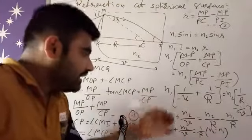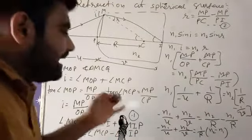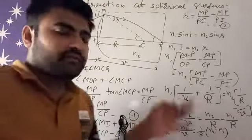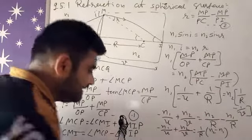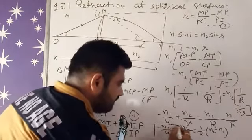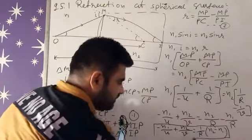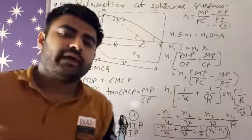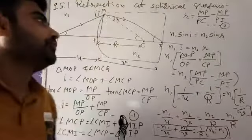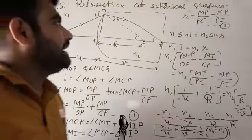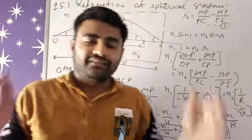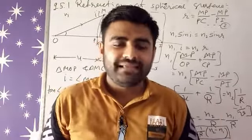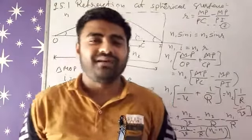So our general equation for refraction at a spherical surface is: minus n1 over u plus n2 over v equals (n2 minus n1) over R. This formula applies whenever refraction takes place at any transparent spherical surface, and we can use it to find any unknown term. That's our topic — refraction at a spherical surface. Thank you so much for watching till the end. Please like my videos and subscribe to my channel.